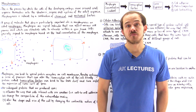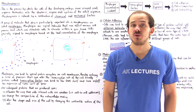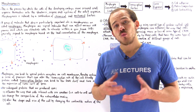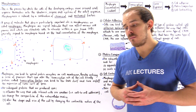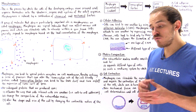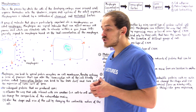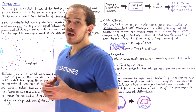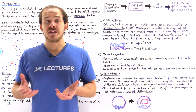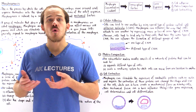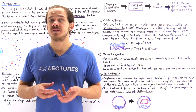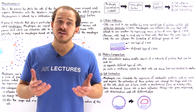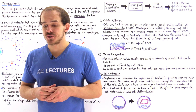Morphogenesis is the process by which the many individual cells within a developing embryo move around and organize themselves to eventually form the specialized and complex structures, organs, and systems that make up that adult organism.